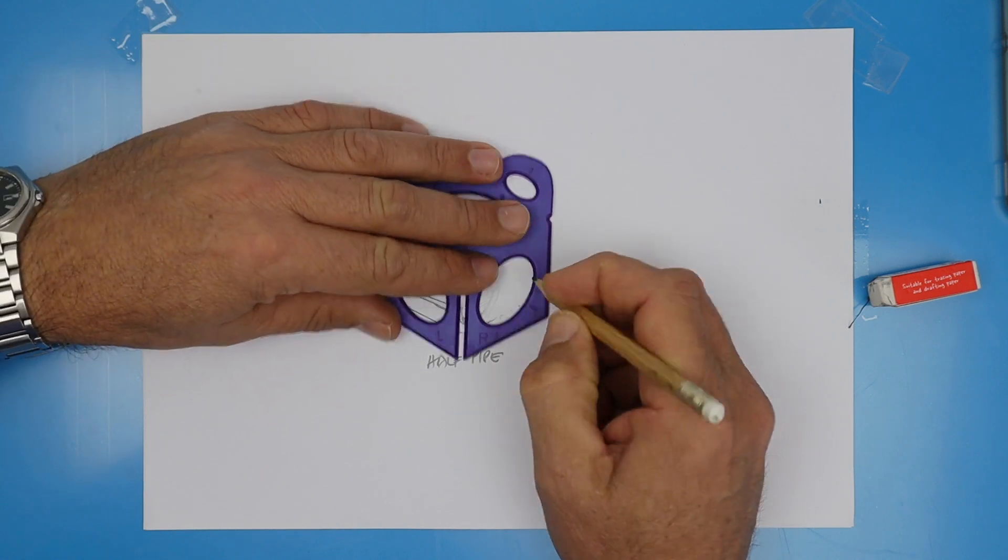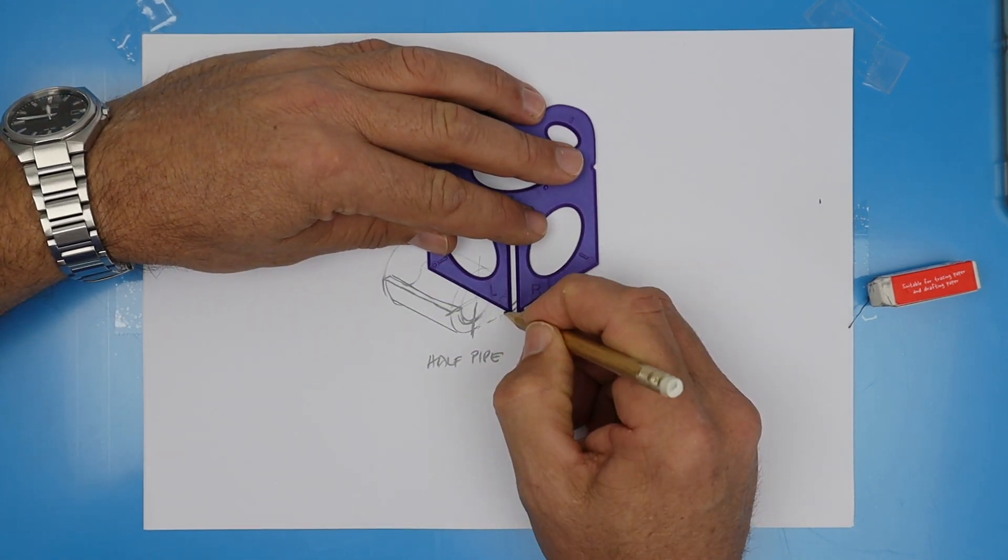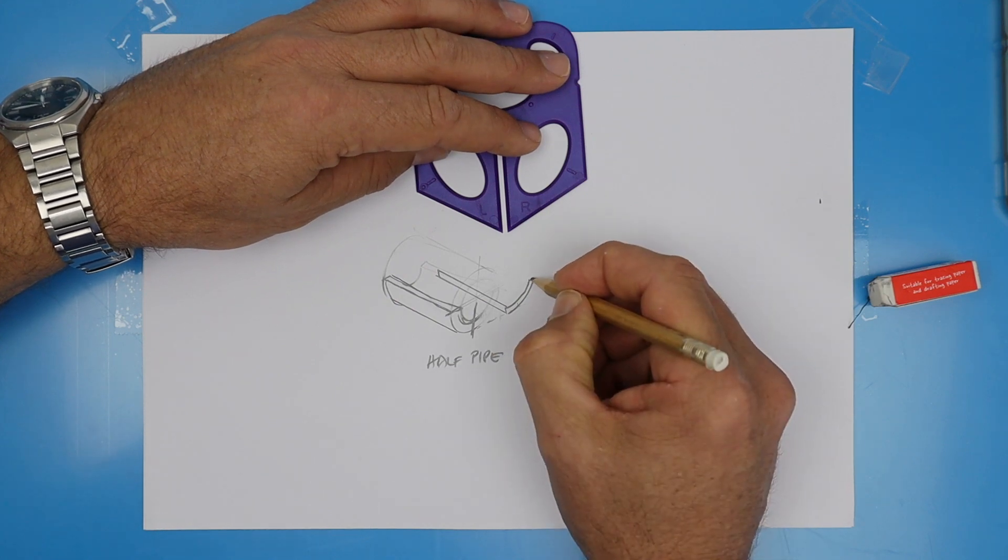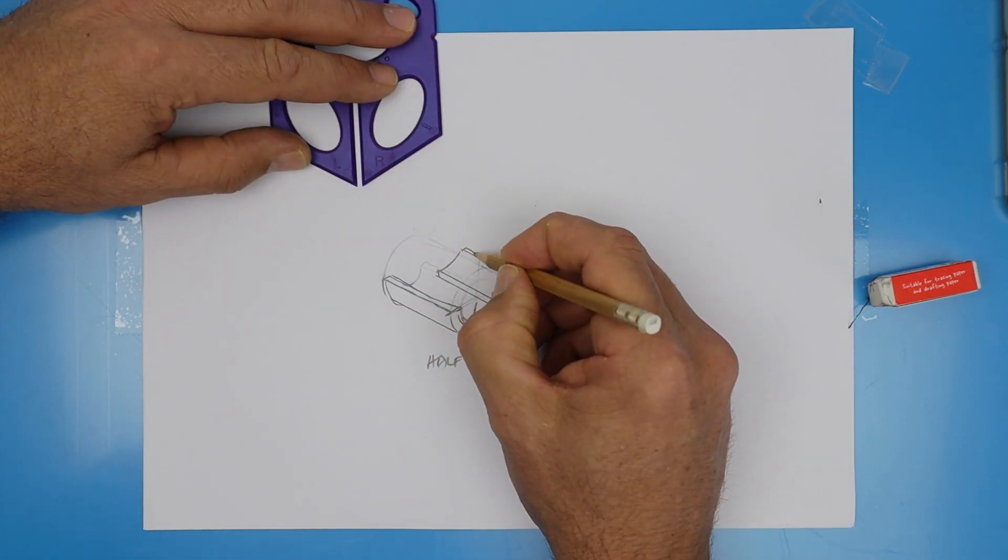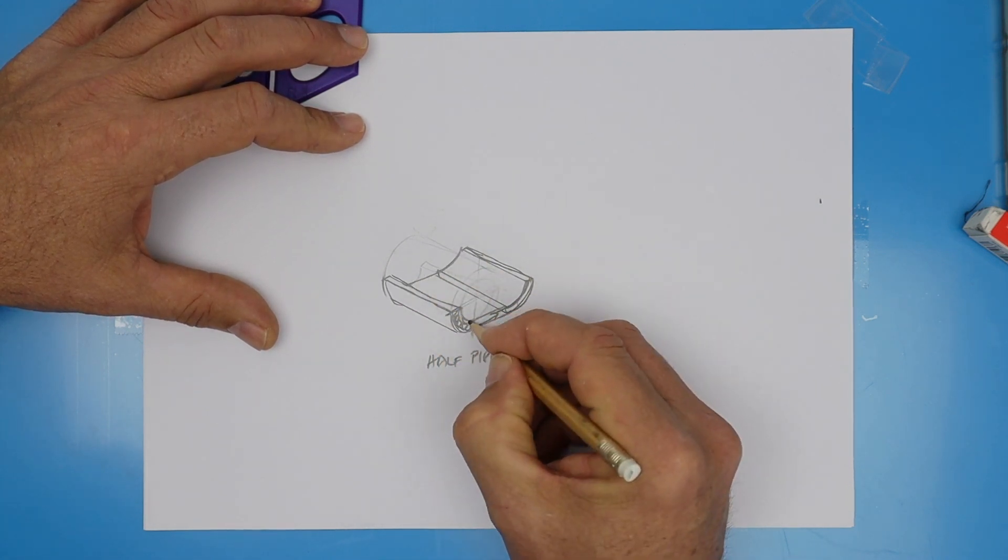If I rub out that far quarter, and then I redraw it slid out a little bit, then I've still got a halfpipe, but it's got a little flat section in the middle. So that's the basis of what we're going to be drawing today. All right, let's get started.